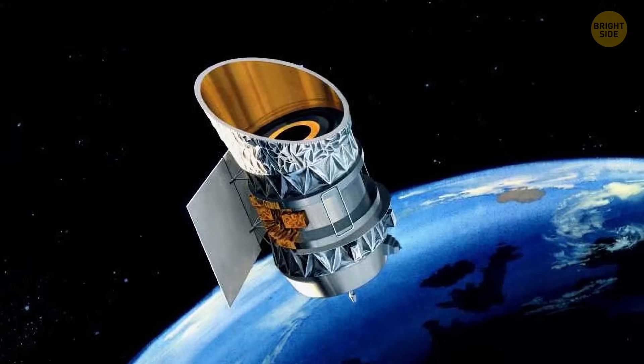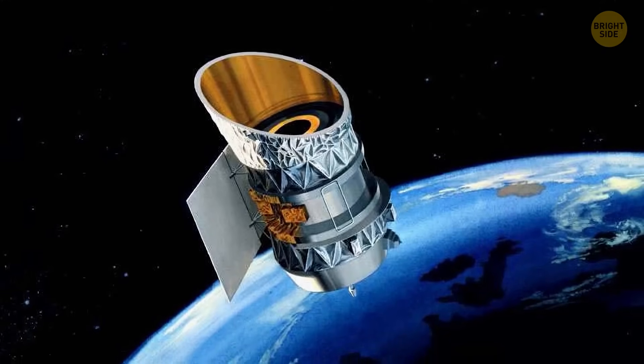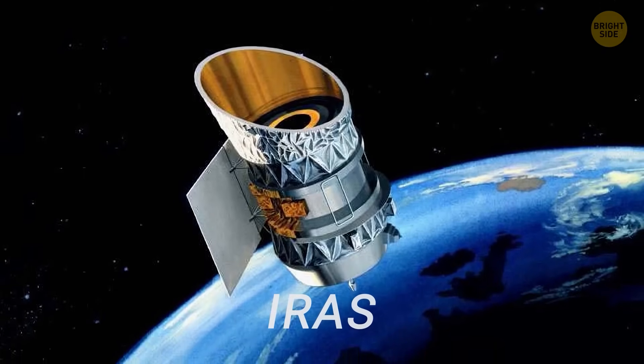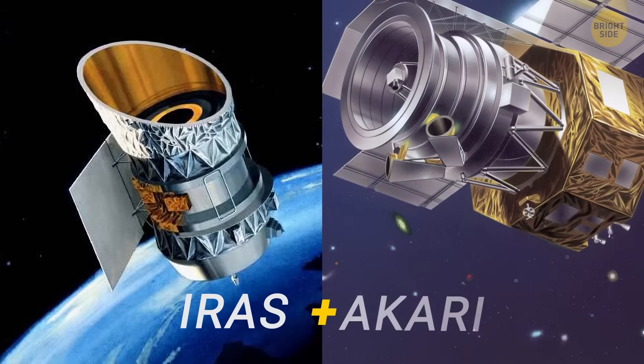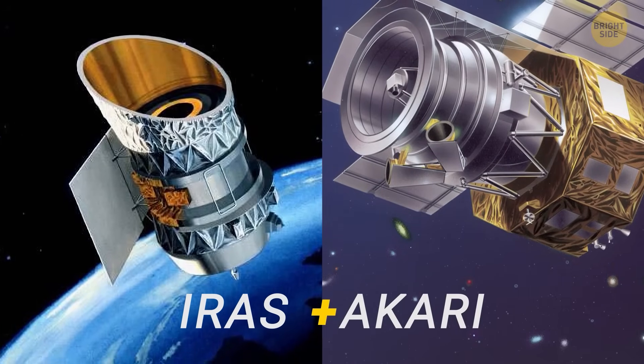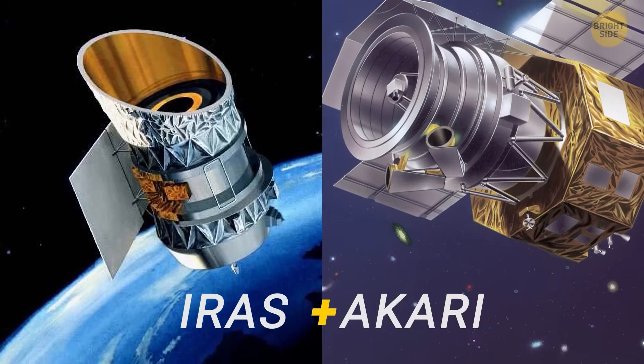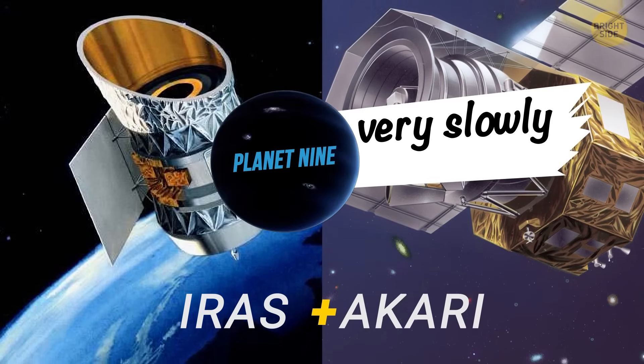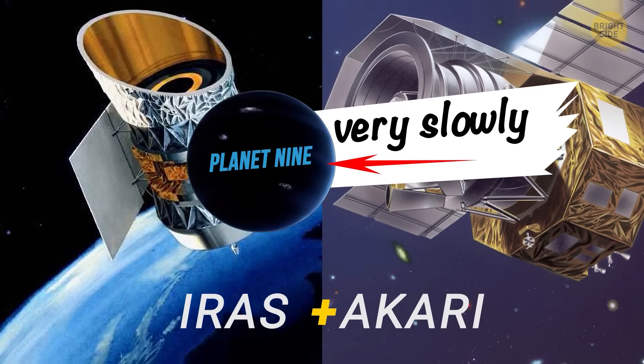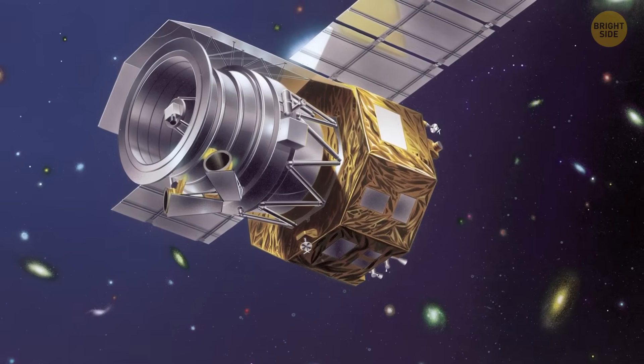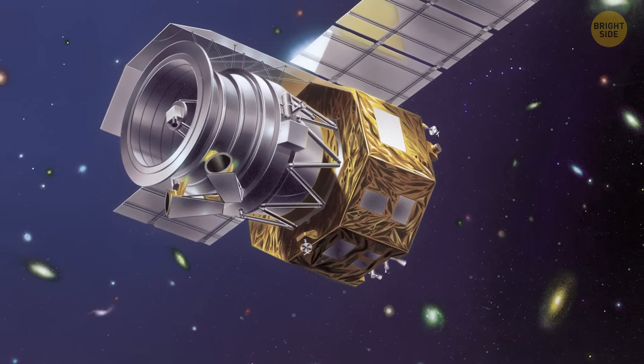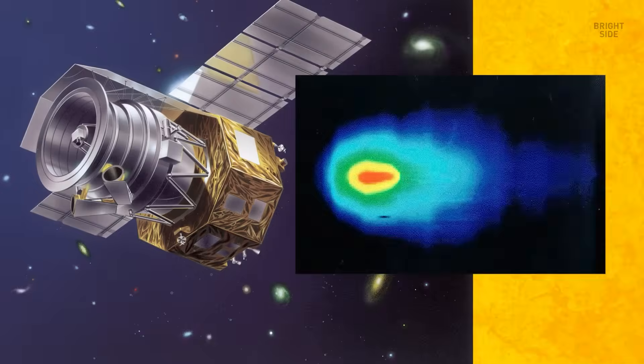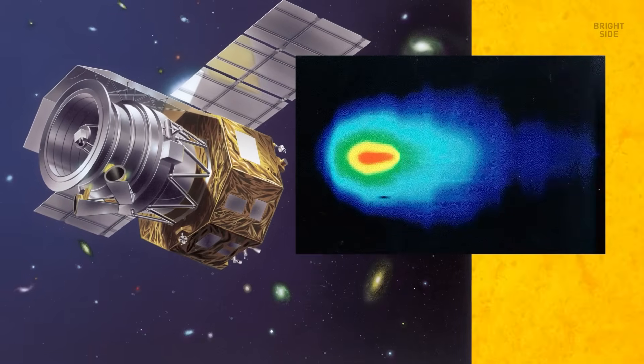But recently, a group of researchers tried something clever. They used data from two special space surveys called IRAS and AKARI. These two looked at the sky in invisible light, far infrared, about 23 years apart, which is helpful because Planet 9 is supposed to move very slowly. The team focused on a special list from AKARI, which is better at finding faint, moving things in space.